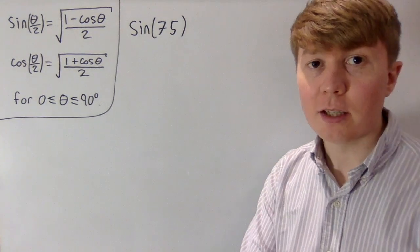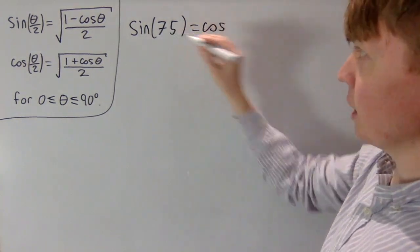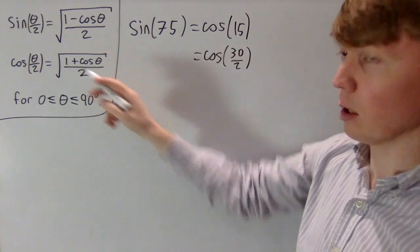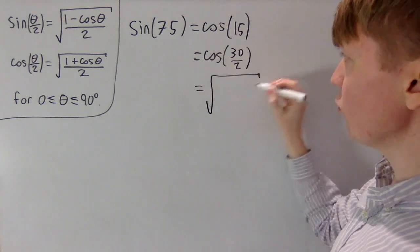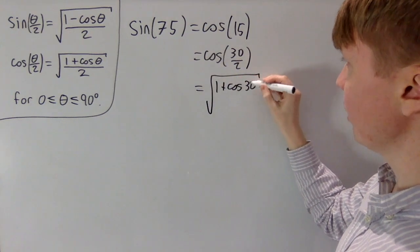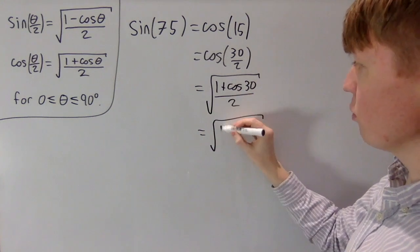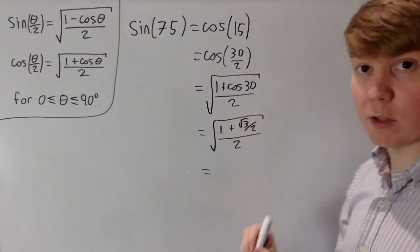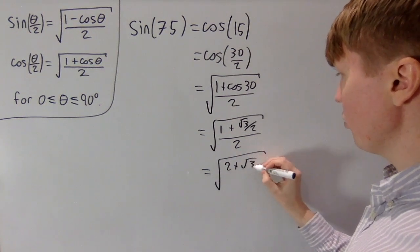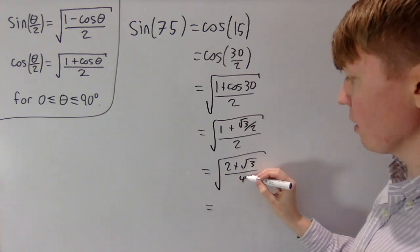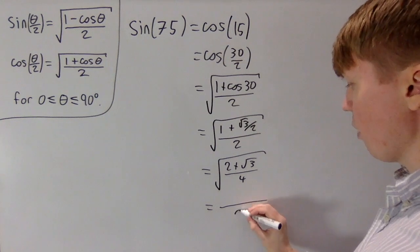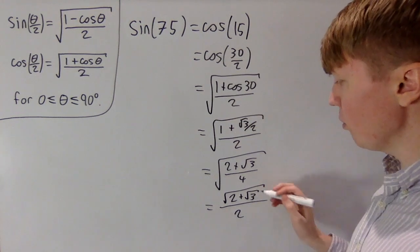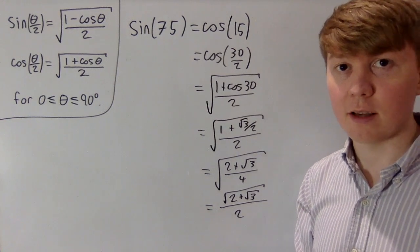For sin 75, we write this as cos(90 minus 75), which is cos 15, which is cos(30 over 2). Using the cosine half-angle formula with θ = 30, we write this as the square root of (1 plus cos 30) all over 2. With cos 30 equal to root 3 over 2, we get (1 plus root 3 over 2) all divided by 2. Multiplying the top and bottom by 2 gives (2 plus root 3) all over 4. Taking the square root of 4 out as a 2 leaves us with root (2 plus root 3) all divided by 2, which we could denest as before.